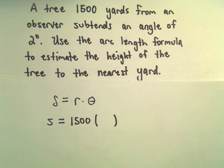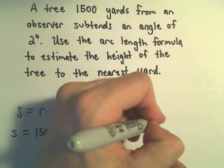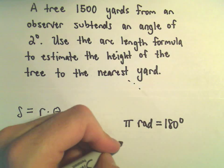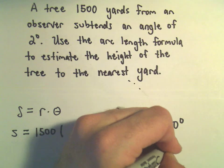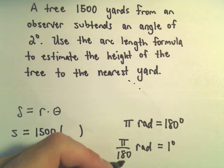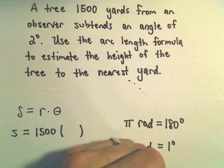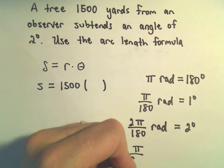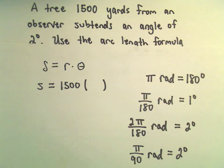Again, we've got to convert theta into radians. Pi radians is equal to 180 degrees. If we divide both sides by 180, we'll get π/180 radians is equivalent to 1 degree. And if we simply multiply both sides by 2, we'll get 2π/180 radians equals 2 degrees. So that's simply going to be π/90 radians, which is equivalent to 2 degrees.